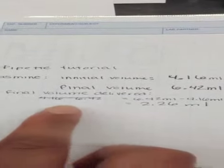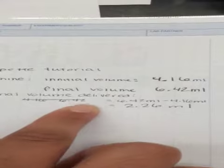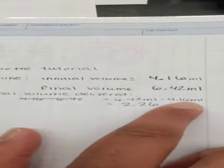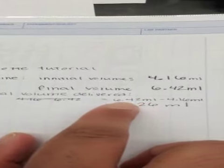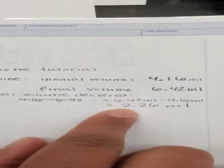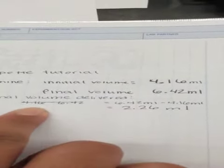Now in order to find the final volume delivered, you must subtract the initial volume from the final volume. And that will give you 2.26 milliliters. That's your final volume delivered.